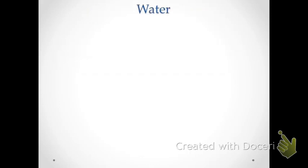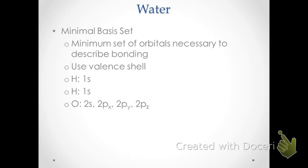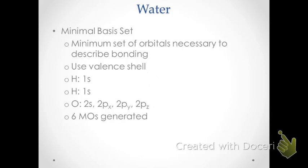We start with a simple polyatomic — water — with three atoms. We'll use what's called a minimal basis set, which represents the minimum number of orbitals necessary to adequately describe bonding. We'll use the valence shell from all atoms involved: the 1s orbital from each hydrogen atom, and from oxygen the 2s, 2px, 2py, and 2pz orbitals. We have six atomic orbitals altogether, which means we will generate six molecular orbitals.